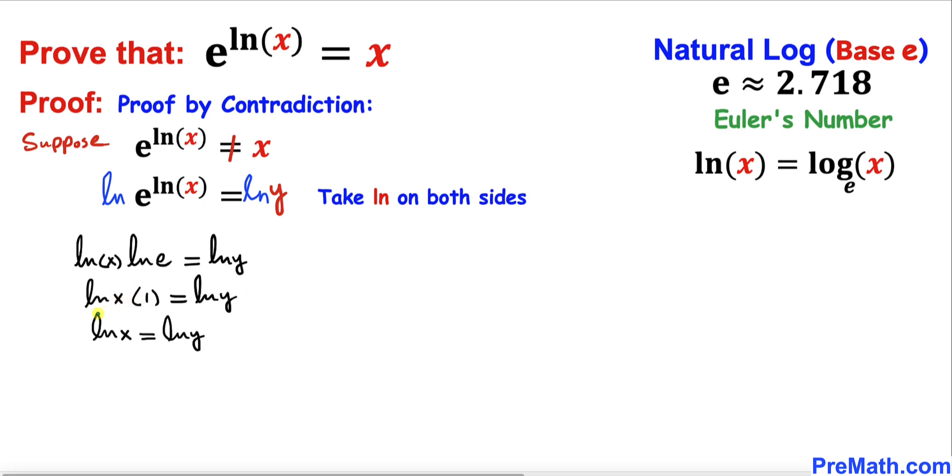On the left-hand side, 1 times natural log of x is the same as natural log of x. And by the definition, if natural log of x equals natural log of y, then we can write x equals y.